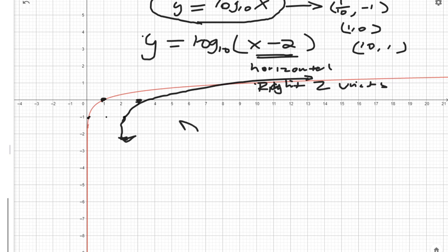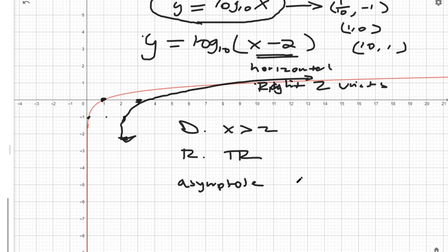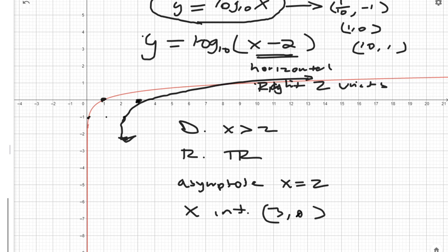The domain of this shifted function is all numbers greater than 2. The range is still all real numbers. The asymptote is x equals 2. And the x-intercept is (3, 0). Just keep in mind: if there's a number inside the parentheses, that's a horizontal shift; if it's on the outside, it's a vertical shift either up or down.